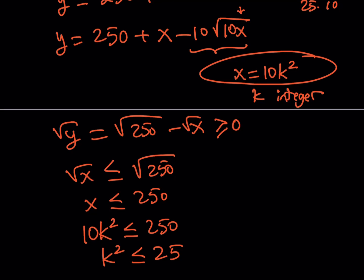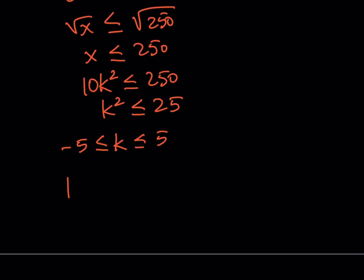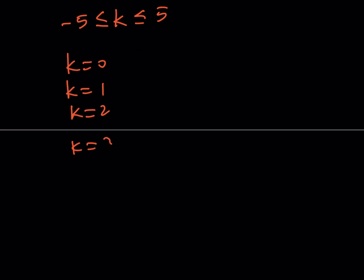But obviously if k is positive or negative it doesn't really matter because notice that x is equal to 10k squared so even if k is negative we're going to square it to find x so it doesn't really matter. Let's just consider the positive values including 0 of course so k is going to be between negative 5 and 5 but again the negative values don't really matter here so I can safely say that I can replace k with 0, 1, 2, 3, 4 and 5. So this is basically going to give us six solutions as ordered pairs.